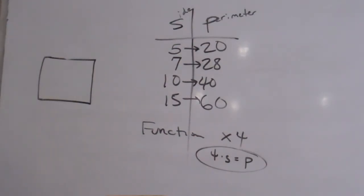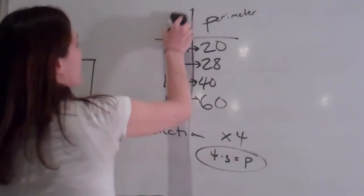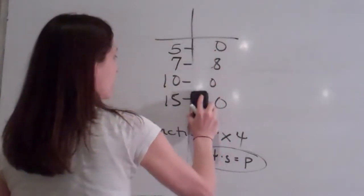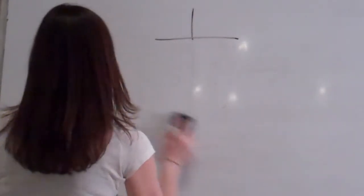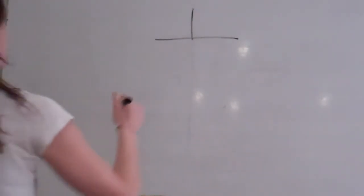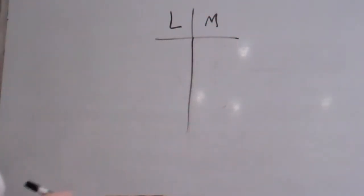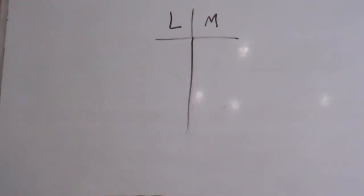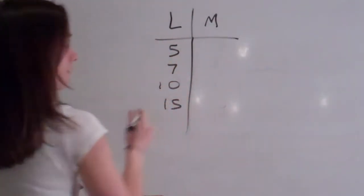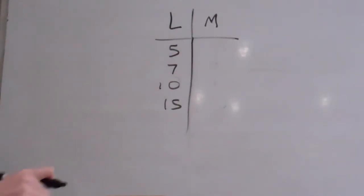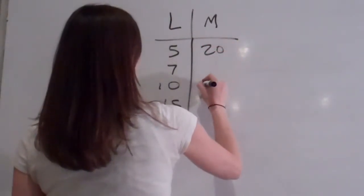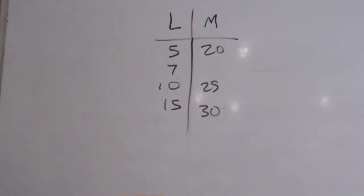Four times our side equals our perimeter. So this is the formula, so to speak, for our function that we had to come up with. All right, let's try another one.